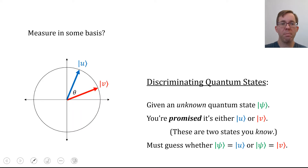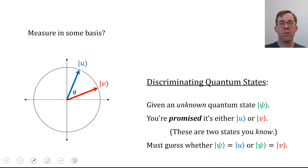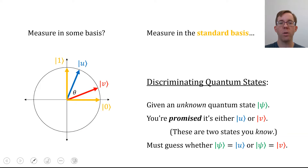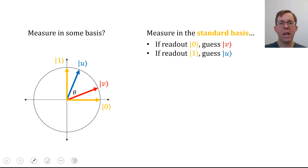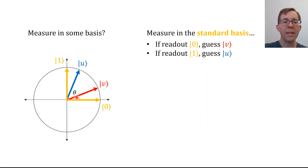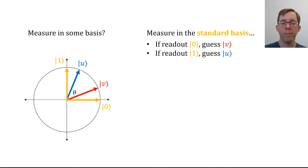The other thing you can do is measure the qubit psi in some basis. After rotating so that the bisector of u and v is at 45 degrees, let's imagine we measure in the standard basis — the basis of zero and one. By looking at the diagram, a good strategy seems to be: if the readout is zero, guess that psi was in state v; if the readout is one, guess that psi was in state u. This algorithm has some error, and let's figure out what that error is.